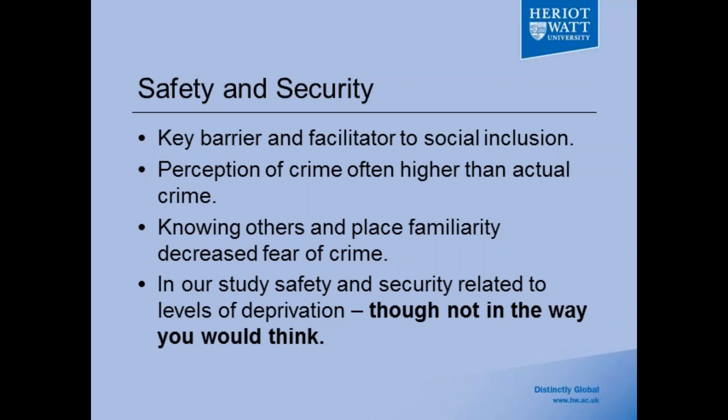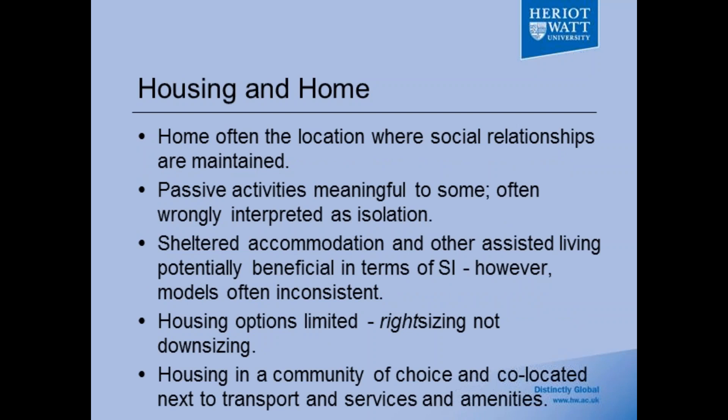Housing and home were strongly linked to social inclusion and exclusion. Home was very important for social relationships — having friends and family come round represents passive activities within the home. Often people would say they like reading or knitting, and while these activities are rewarding, there can be an assumption that they're isolated. Some people were wrongly interpreted as socially isolated when they said, 'I'm not isolated — I'm very engaged in what I'm doing, just within the home environment.'